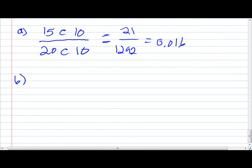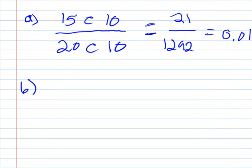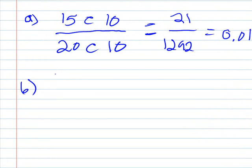And then for B, it wants to know exactly 8 questions on the exam. So once again, he has to choose 10 of the 15 that he knows. Oh wait, my bad. Never mind, just 8. And then he knows there's 10 out of the 20 on the test.